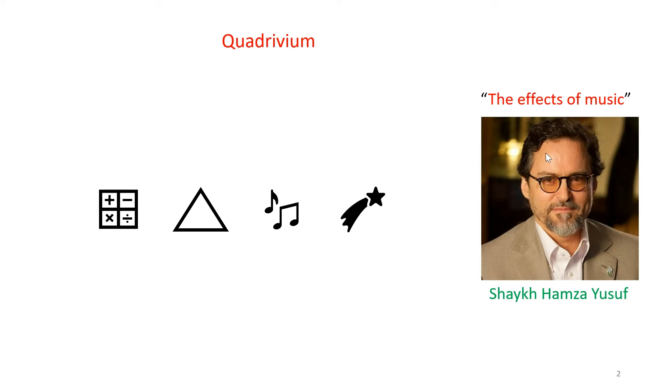In the past lecture, we discussed the principle of quadrivium and how numbers are studied in their raw form, from arithmetic to numbers in space, which is geometry, to numbers in time, which is music, and then finally to numbers in both space and time, which is astronomy, together forming the quadrivium.